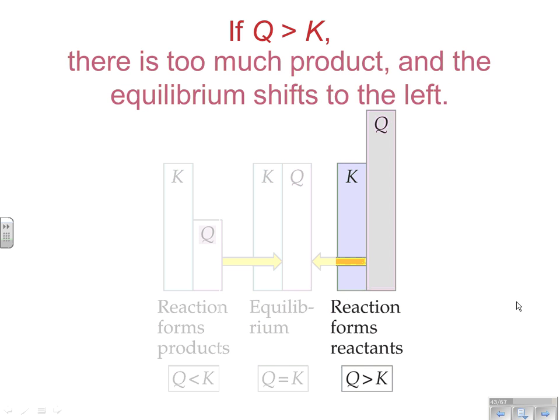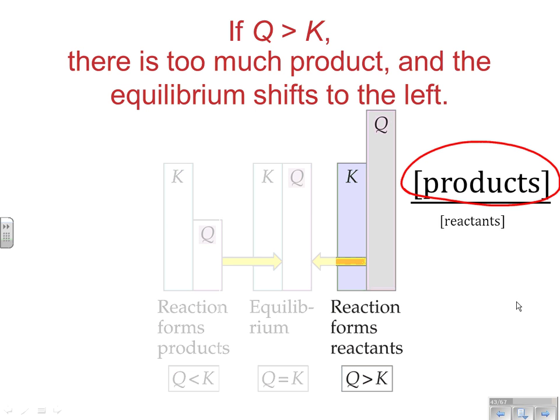What would happen if Q is greater than K? Now remember, we have products on top in our K expression, our equilibrium expression, and reactants on bottom. So the only way to get a value for Q that's greater than K is if our amounts, our concentrations on top, were higher than they were supposed to be. So whenever Q is greater than K, your product amounts are too high, your reactants amount are too low, so equilibrium is going to have to move towards the reactants. It's going to shift to the left to achieve equilibrium.